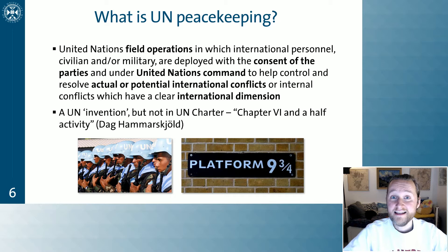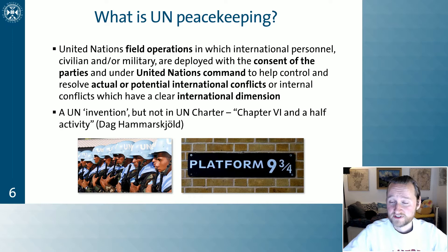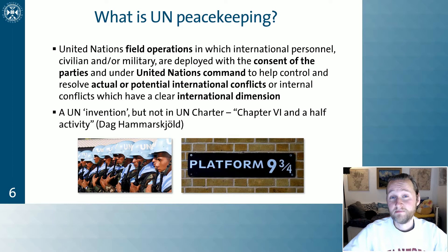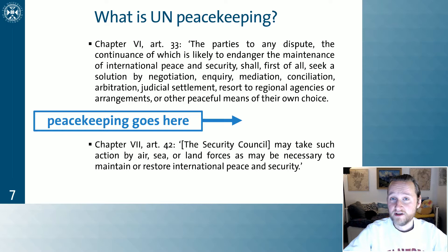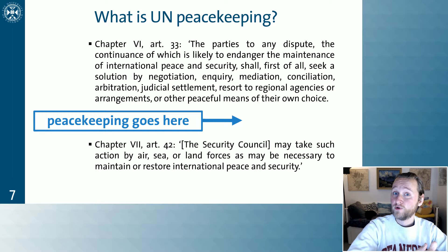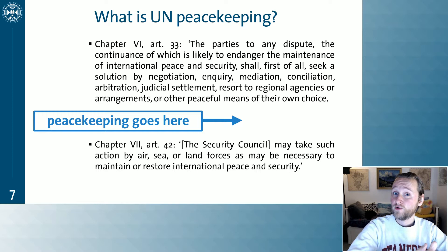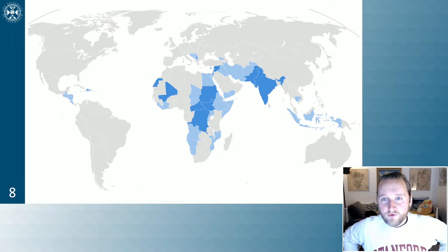This is a UN invention — not intervention — because the UN Charter actually doesn't mention peacekeeping anywhere. It was not originally envisioned by the founders of the UN. Dag Hammarskjöld therefore memorably called peacekeeping a 'Chapter Six and a Half' activity. Much like in Harry Potter there's a platform nine and three quarters between nine and ten, UN peacekeeping sits between Chapter Six — the peaceful means of conflict resolution — and Chapter Seven — a full Security Council mandated military intervention. It's a little more than peaceful but a little less than full military intervention.